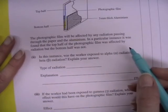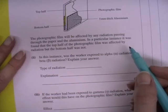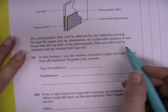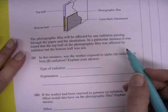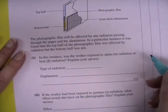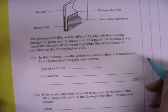The photographic film will be affected by any radiation passing through the paper and the aluminum. In a particular instance it was found that the top half of the photographic film was affected by radiation but the bottom half was not. In this instance, was the worker exposed to alpha radiation or beta radiation? Explain your answer.